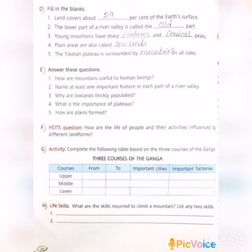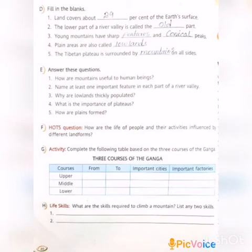All of you turn to page number 20. Section D: Fill in the blanks. First question: Land covers about blank percent of the earth's surface. Answer is 29%. Second question: The lower part of a river valley is called the blank part. Answer is Old part.